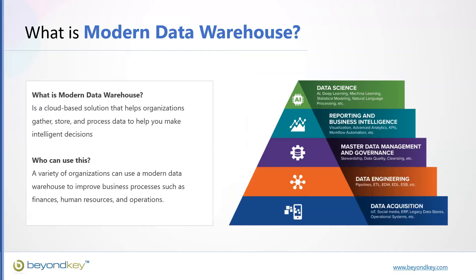A modern data warehouse is a cloud-based solution, as we've already talked about. It gathers and stores information, but in addition to that, it also processes that data to help you make intelligent decisions. It's not just about gathering and storing — it's about processing that information so you can use that data to do better, to make smarter decisions. That's why a variety of organizations use a modern data warehouse to improve their business processes for items such as finances, human resources, and operations. All of those departments need this information to make smarter decisions.